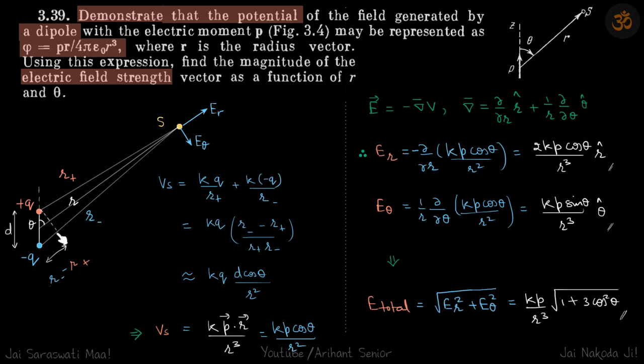If we drop a perpendicular from here, this is the difference between r₋ and r₊, and let the length between the charges be d. Now potential at this point we can write for each of the charges: for +q it will be kq/r₊ plus k(-q)/r₋, so this is the total potential due to both charges.